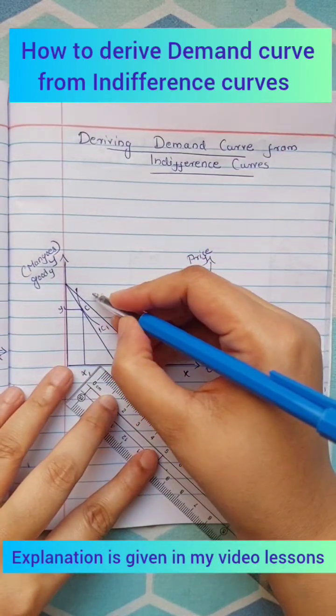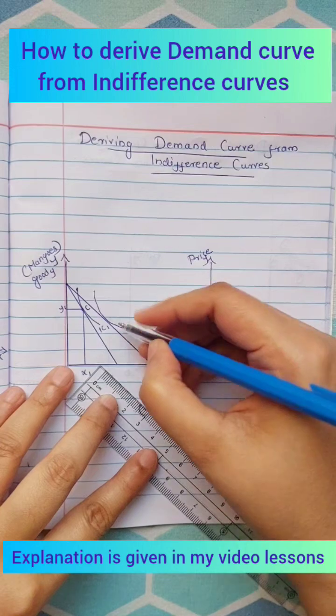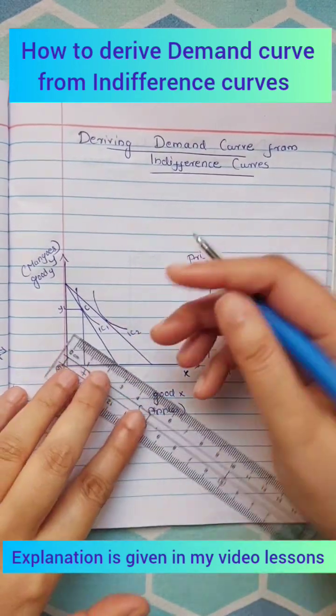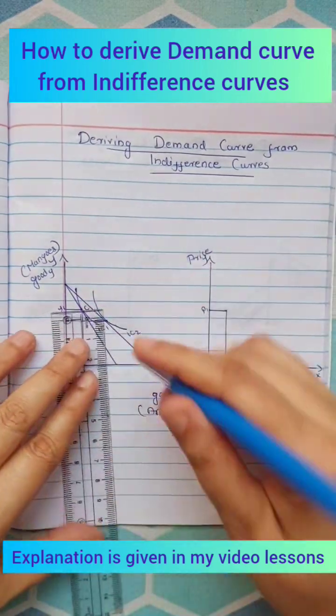When the price of apples decreases while income of the consumer and price of other goods remain the same, the budget line becomes flatter and new consumption equilibrium will be at point D.